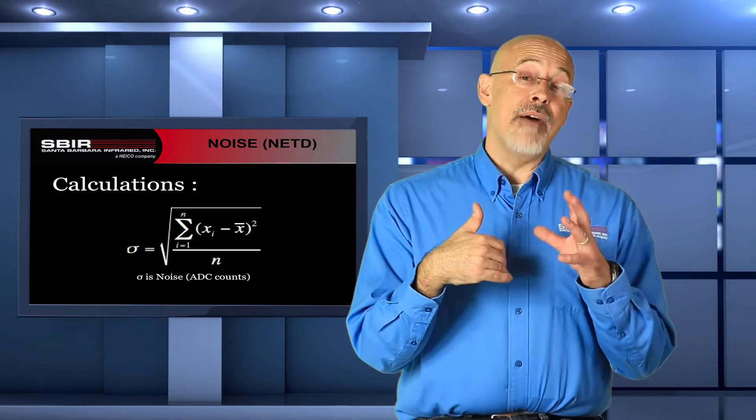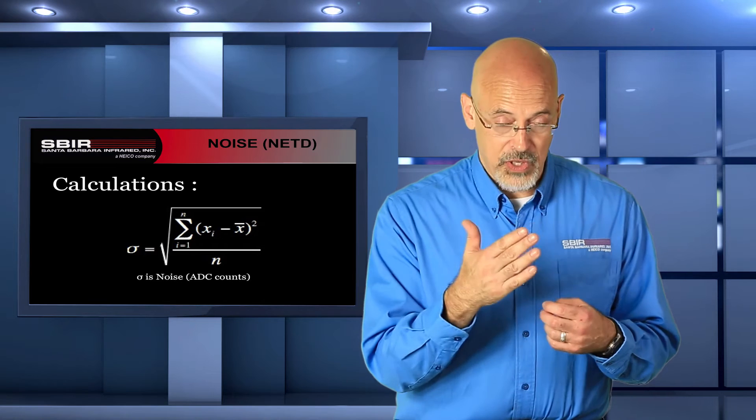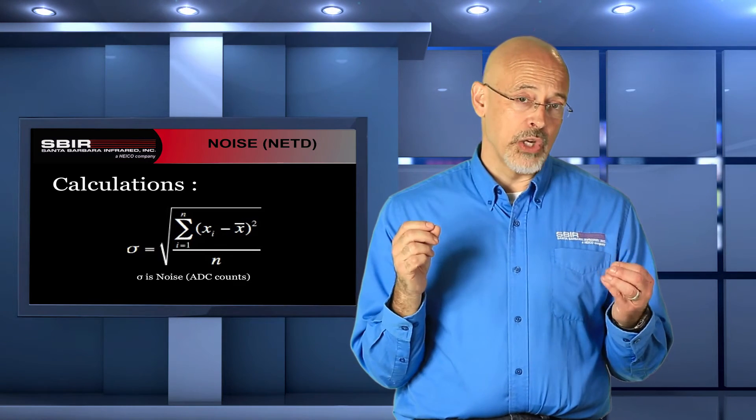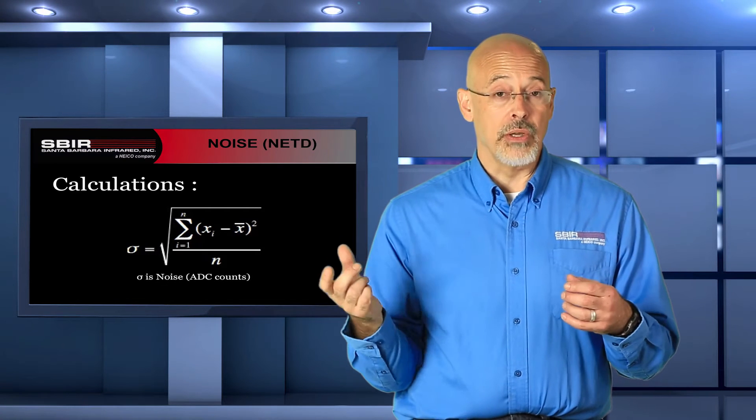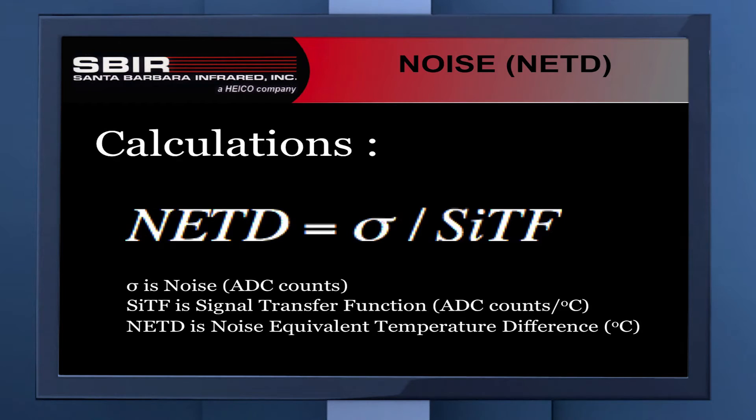That's noise. We have a way of normalizing these measurements. If you remember on our previous video, we talked about SITF. SITF is measuring the amount of signal variation due to the amount of temperature variation. If we take our noise and we divide it by the SITF, we produce a noise signal in units of temperature. And we call that the noise equivalent temperature difference, or NETD.